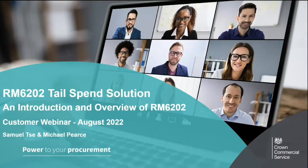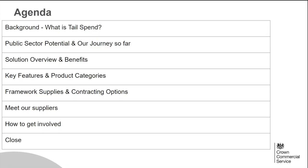Hello and welcome to this webinar providing an introduction and overview of RM6202, Crown Commercial Service's first of its kind tailspend solution. My name is Samuel Chair and presenting with me today is my colleague Michael Pearce. Hello and welcome. Thank you for that, Mike.